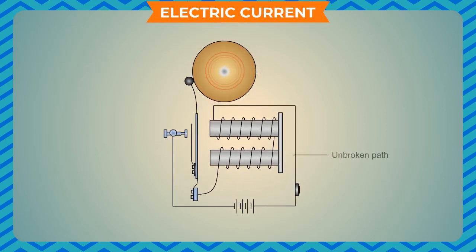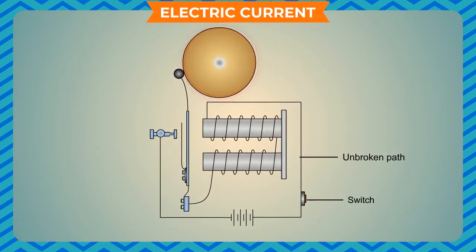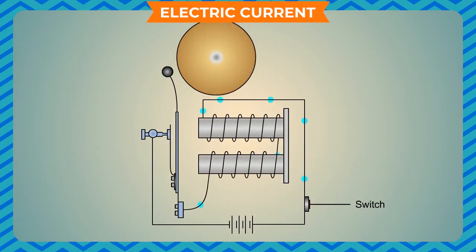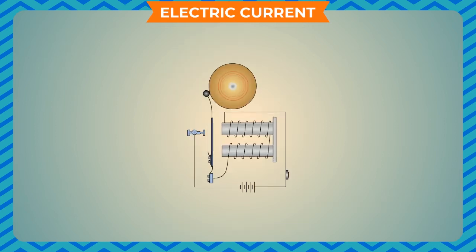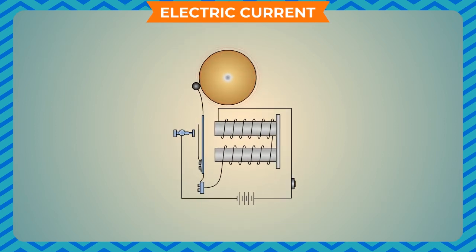Two components are necessary for an electric current to flow. Firstly, a continuous unbroken path or circuit is needed for the current to flow through. A switch is inserted in the circuit to make or break the circuit as required. Secondly, we also need a driving force called electromotive force, which pushes the electrons that carry the charge around the circuit. This force is provided by an electric cell in a circuit.